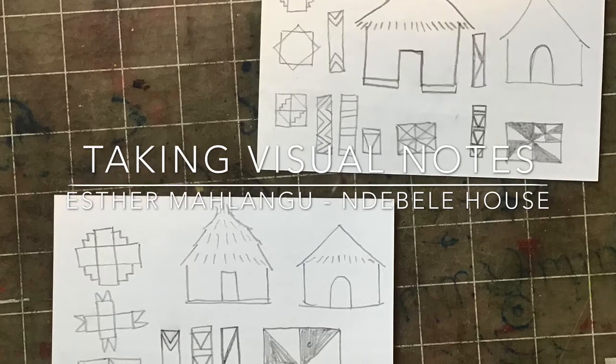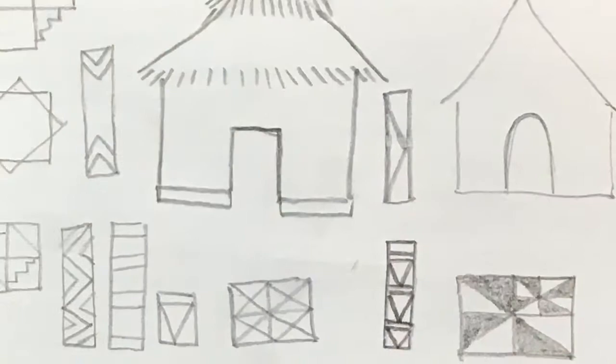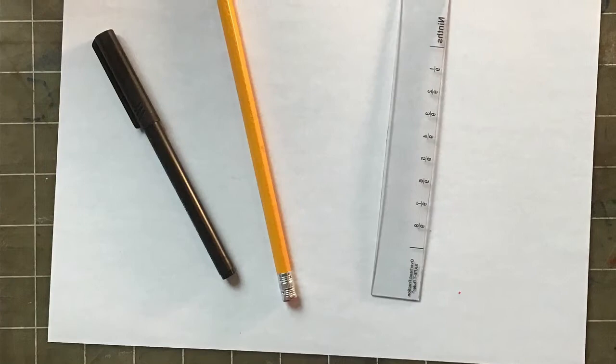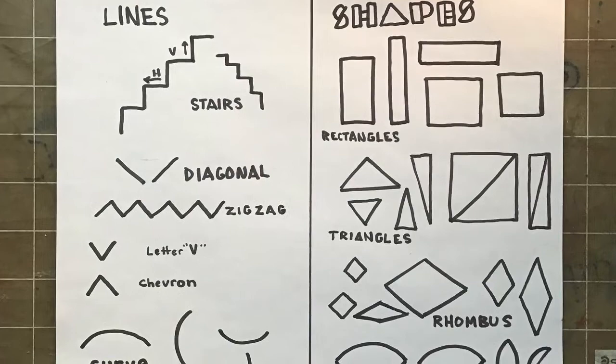Hello and welcome to taking visual notes as we study Esther Mahlangu and her take on the Ndebele house patterns and designs. Today we'll be trying to draw a Ndebele house and some of those traditional patterns. You'll need a pencil and some scrap paper. You might also want a marker or a ruler—those things can help, but all you really need is pencil and paper.